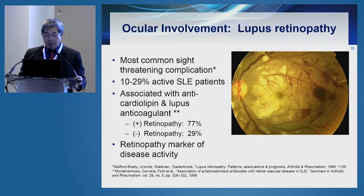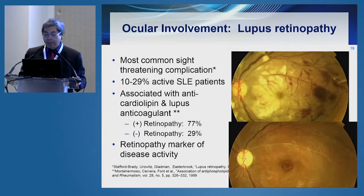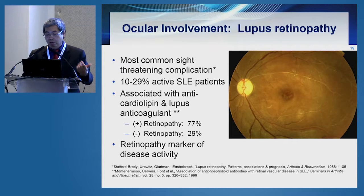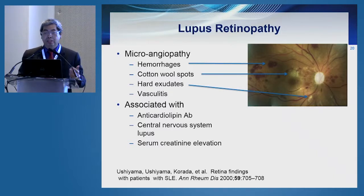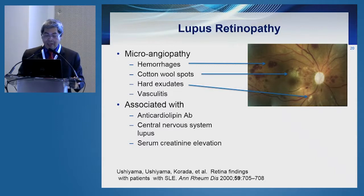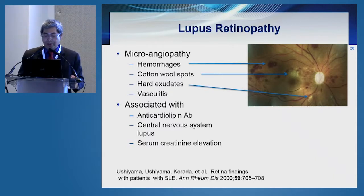We can also consider retinopathy as a marker of disease activity — as we treat the systemic lupus erythematosus and it improves, you can also see improvement in the appearance of the retina. In lupus retinopathy, we find typical features of microangiopathy such as hemorrhages, cotton wool spots, and hard exudates, which are signs of vasculitis. This is associated with anti-cardiolipin antibodies, CNS lupus, and elevation of serum creatinine.